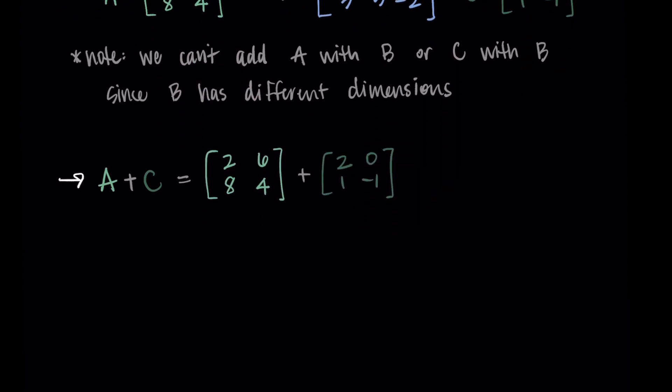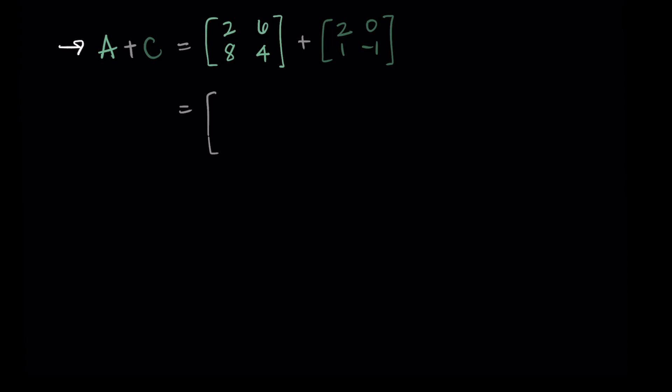All right, so first we're going to do A plus C. I write out the matrix A plus the matrix C, and then I'm just going to add corresponding elements. So I have 2 plus 2, 6 plus 0, 8 plus 1, and 4 plus -1. Then I simplify, so I'm getting [4, 6, 9, 3], and this is my new matrix that's the sum of the two other matrices.